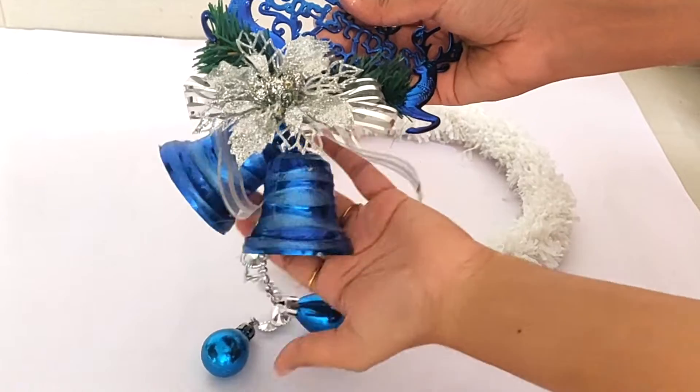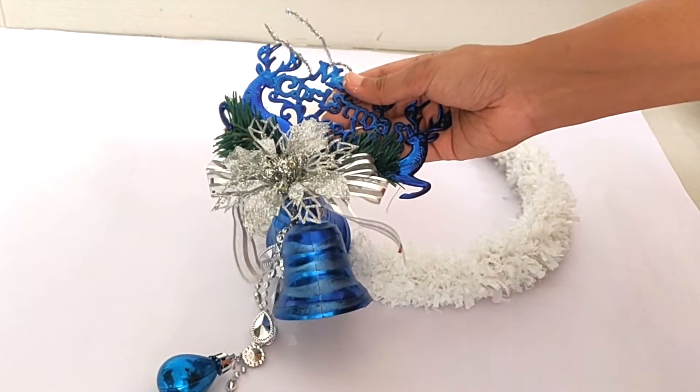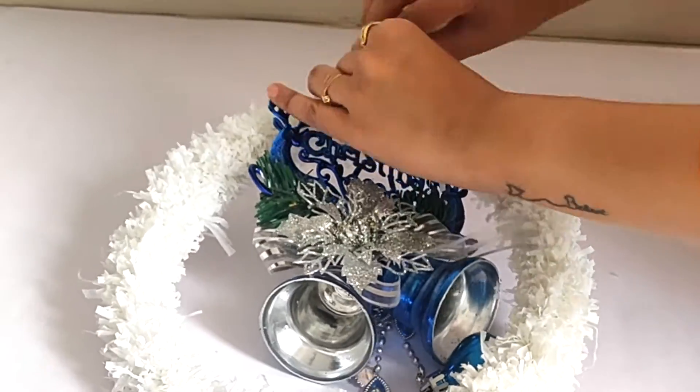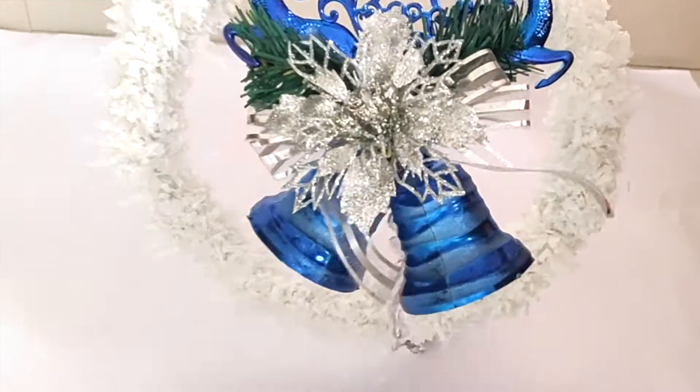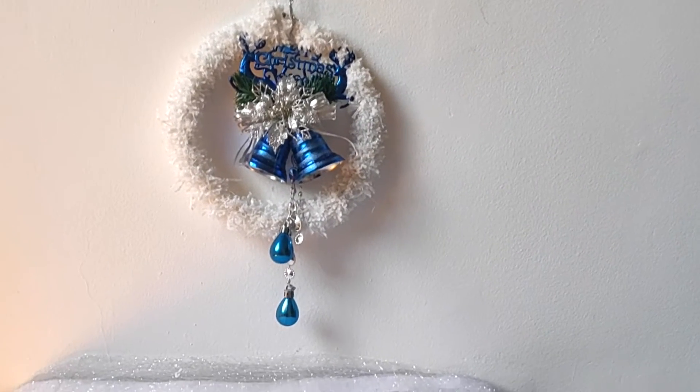Then I took this bell ornament which I already had from last year's Christmas decoration. I tied that to the ring. And my blue and white Christmas wreath is ready.